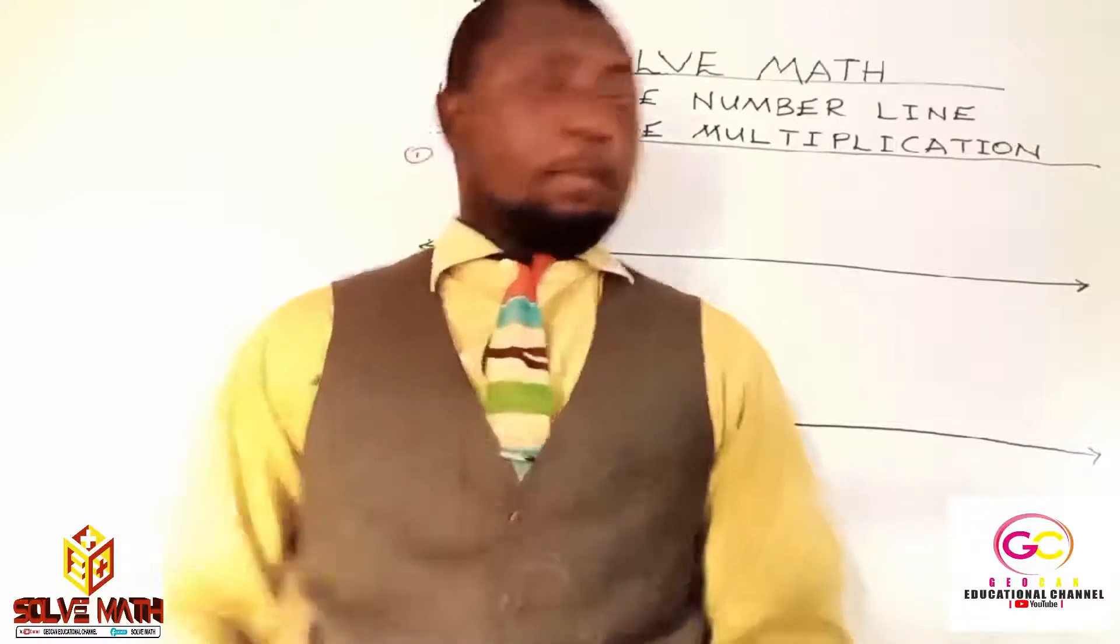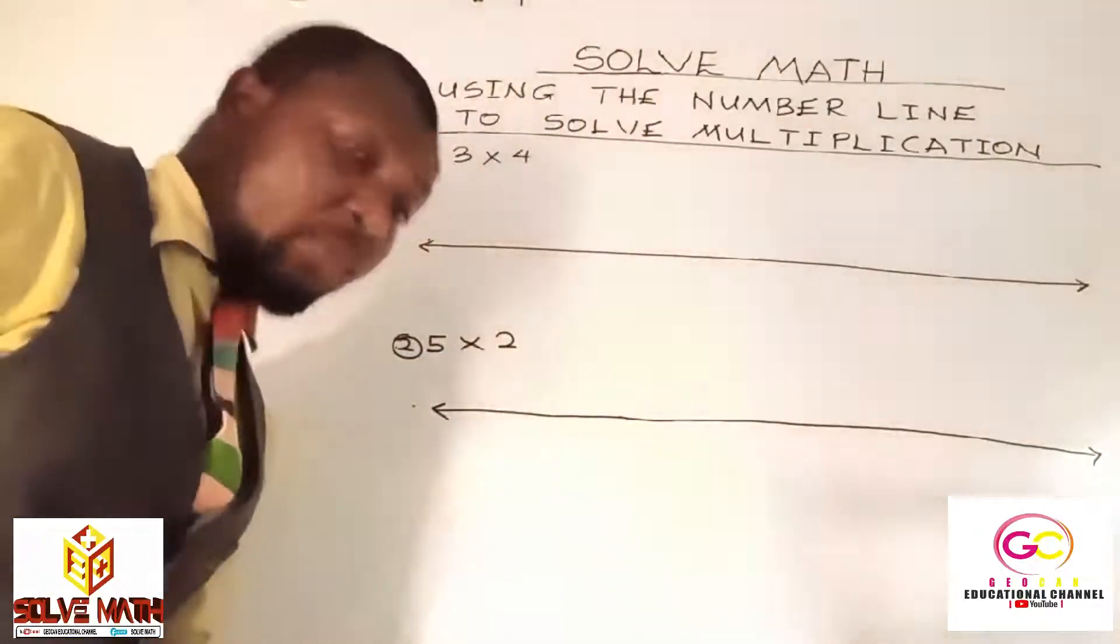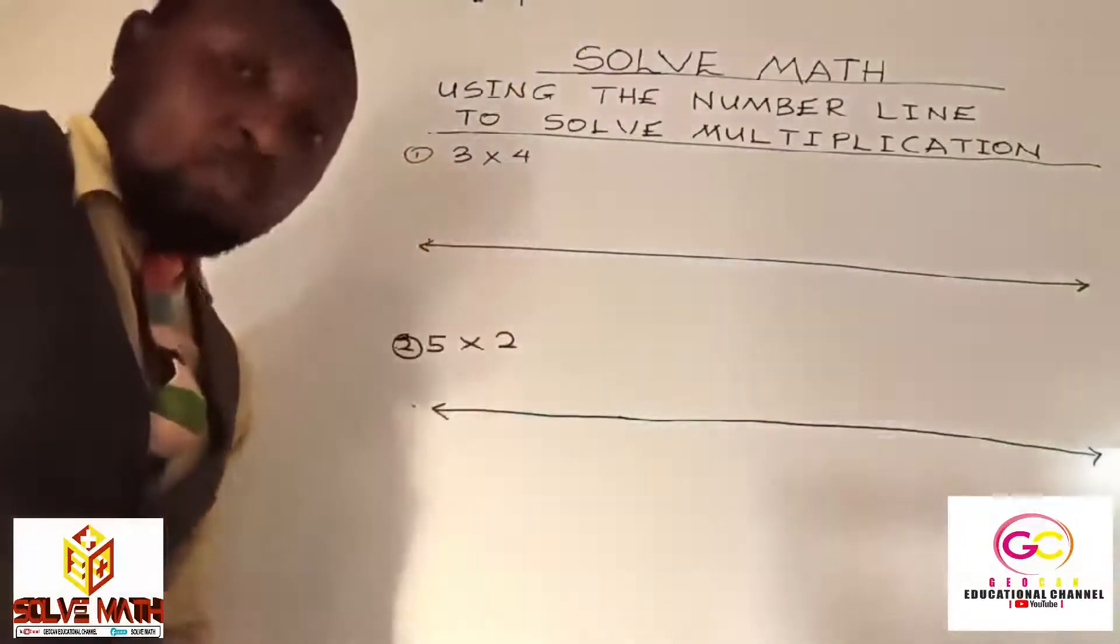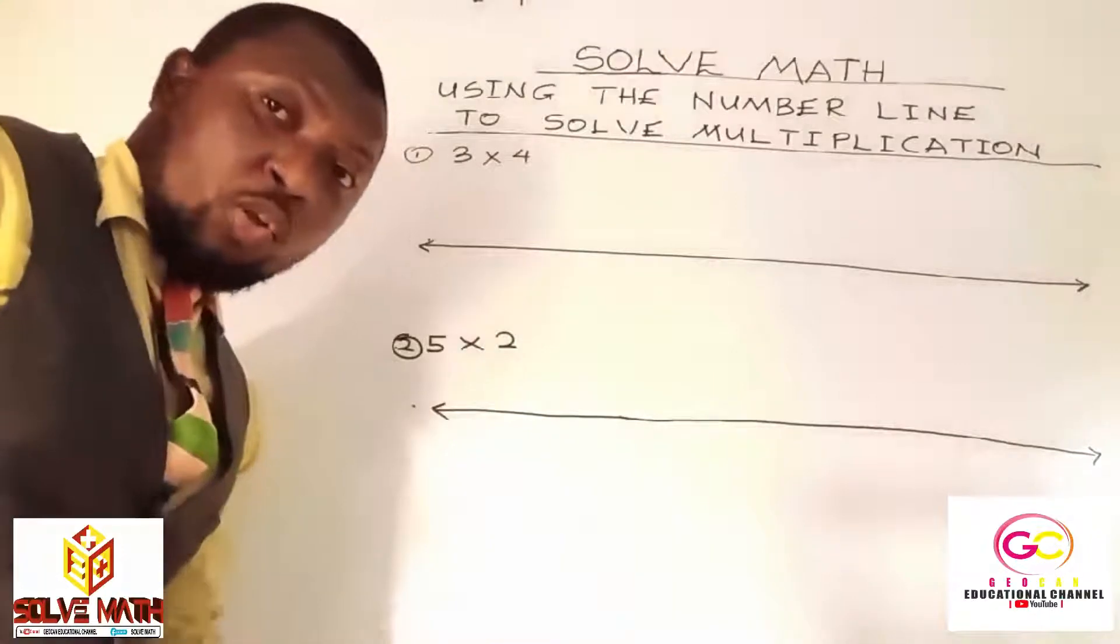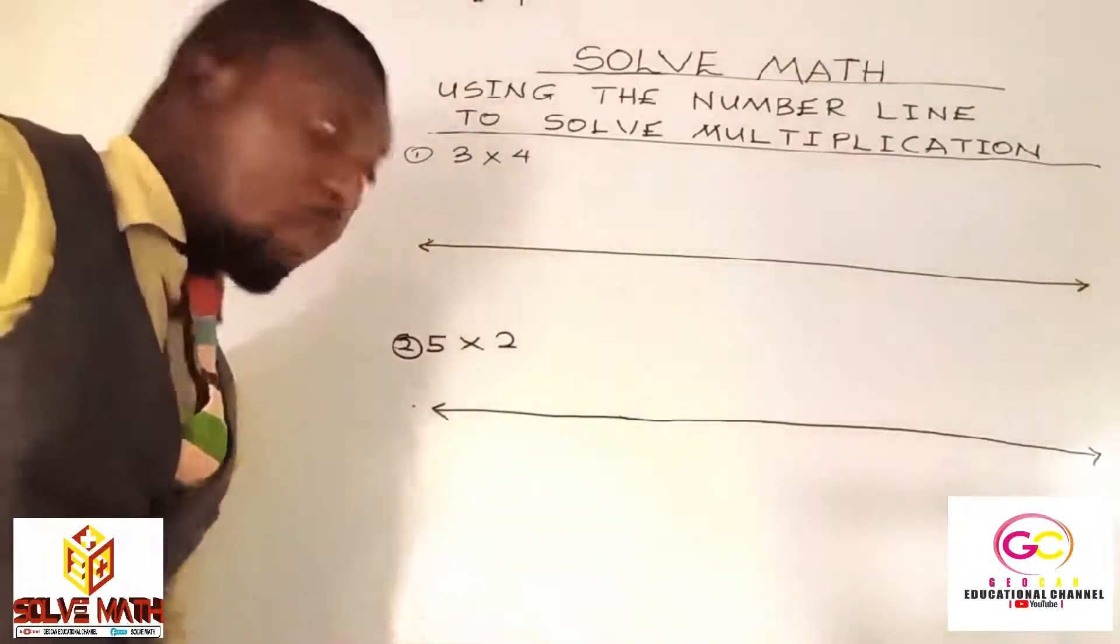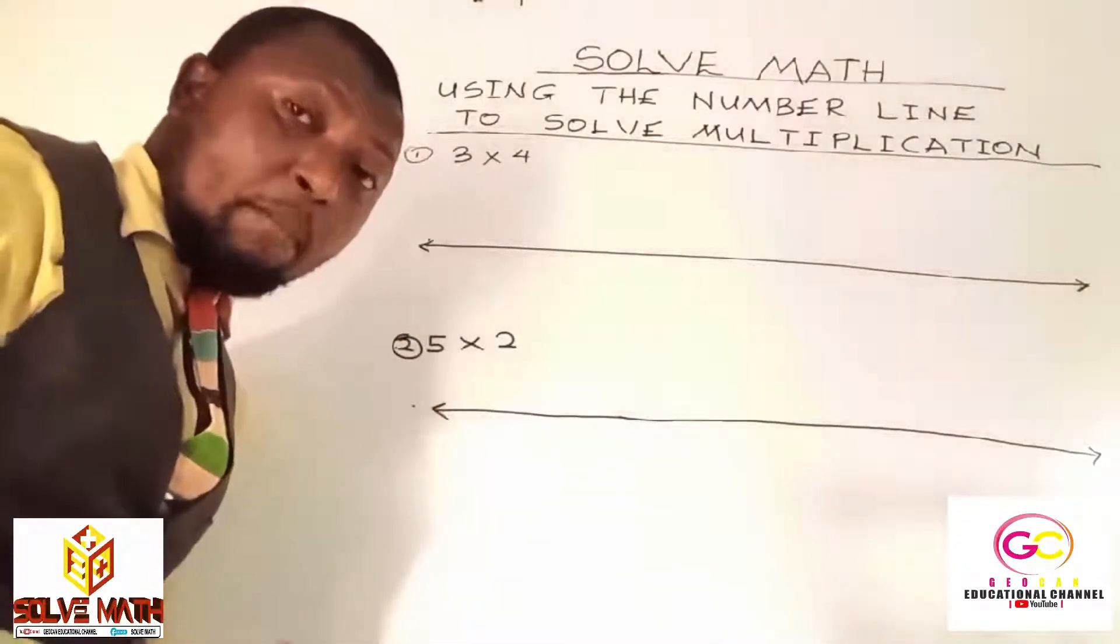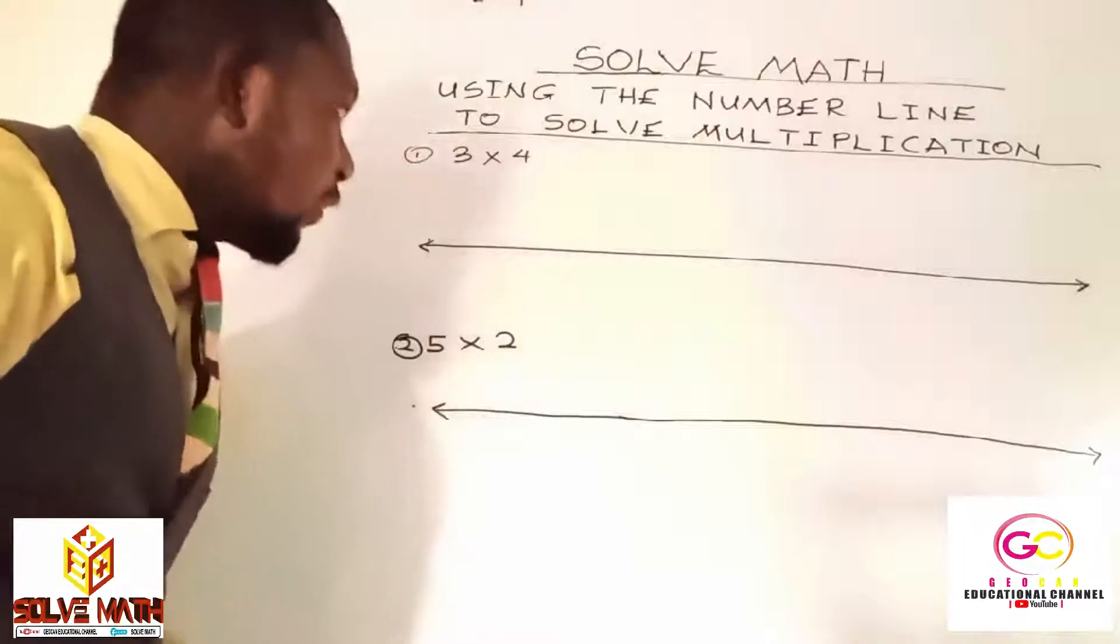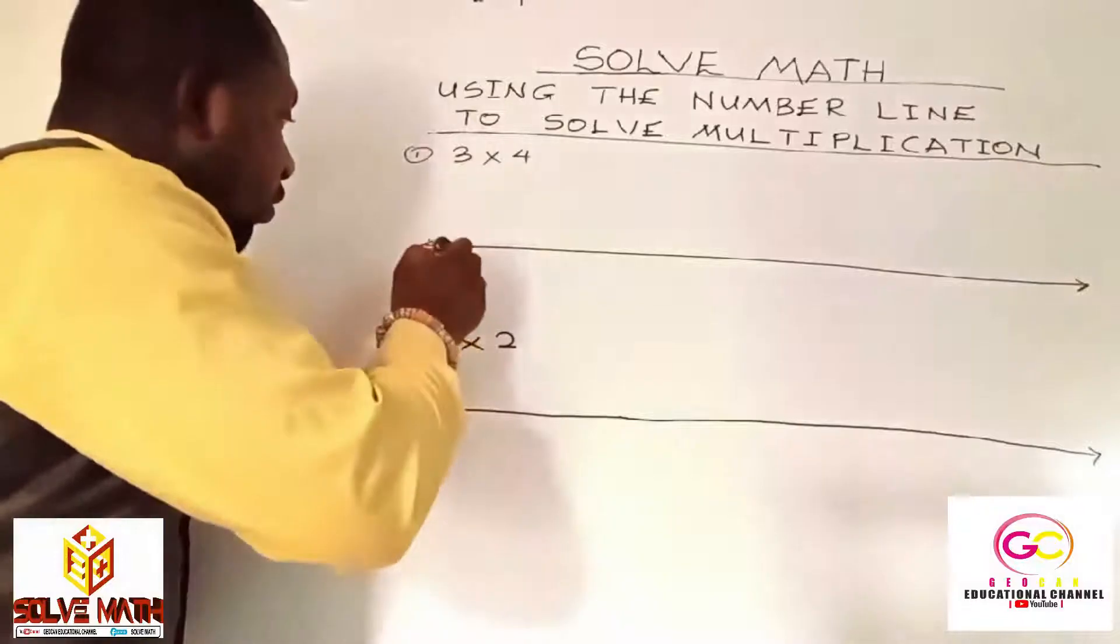Pay critical attention here. This is a number line. But now, the instruction is 3 times 4. We are going to use the number line to solve this multiplication question. First of all, this line needs numbers on it, then it will be complete as a number line. So now, you start labeling it from 0.